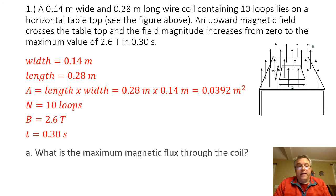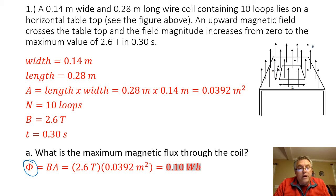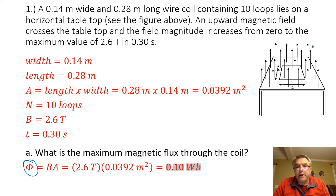The first thing they want us to find is the maximum magnetic flux through the coil. The symbol for magnetic flux is the Greek letter phi, and it is equal to the magnetic field times the area of the loop. So I multiply 2.6 tesla by 0.0392 square meters, and I get a magnetic flux of 0.10 Weber.